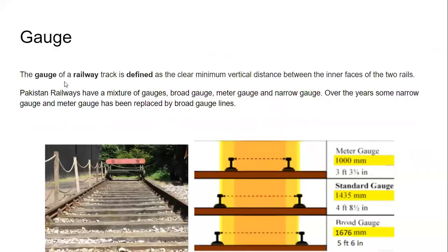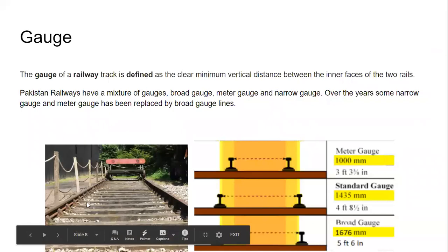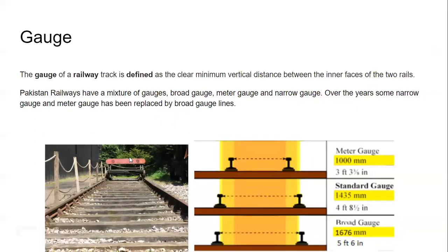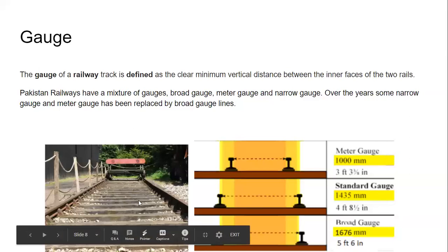Now, as we are discussing railways, let's get into the detail of what a gauge is. The gauge of a railway track is defined as the clear minimum vertical or perpendicular distance between the inner faces of the two rails. Pakistan Railways has a mixture of gauges. Sometimes the distance between the two rails is less, so we call it a narrow gauge. Sometimes the distance is equal to 1000 mm, so we call it a meter gauge. And sometimes it is 1676 mm, which we call a broad gauge line.